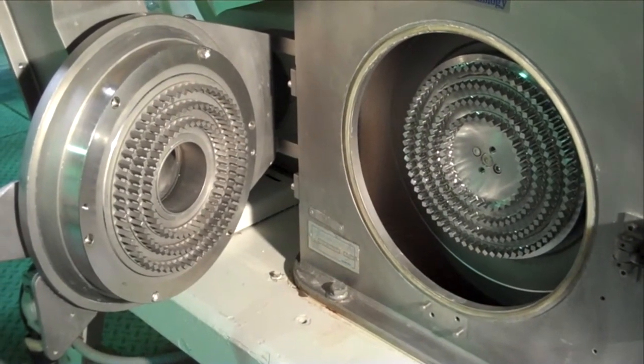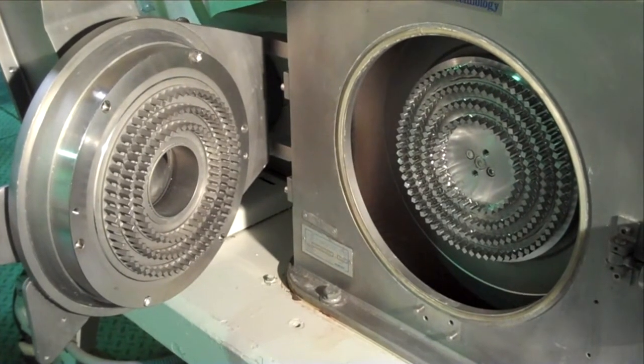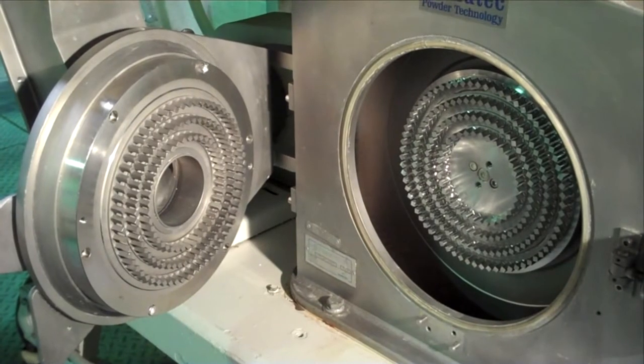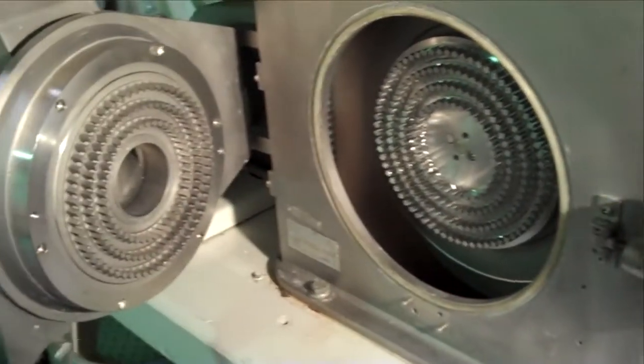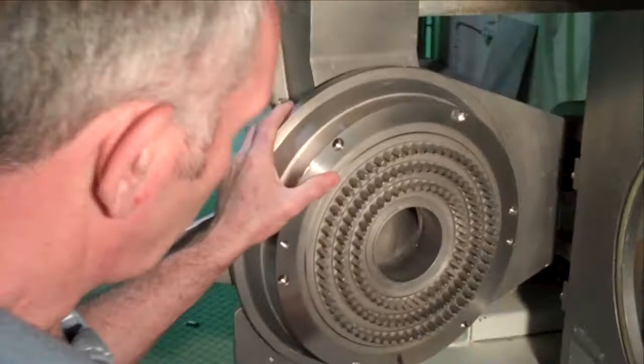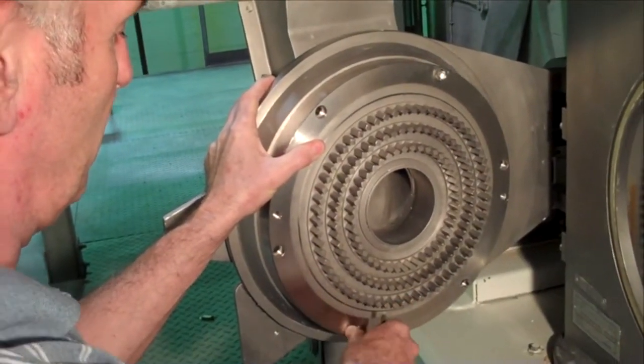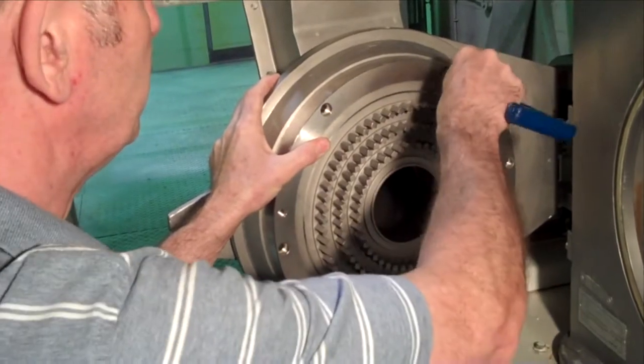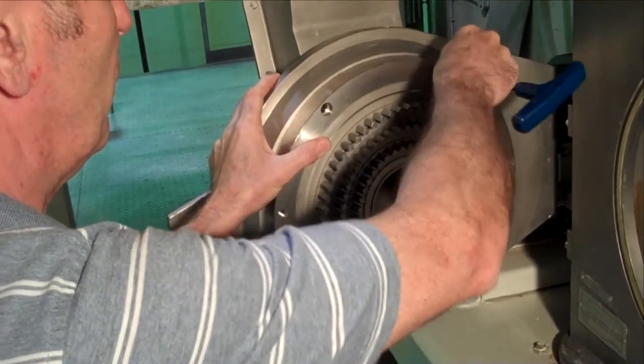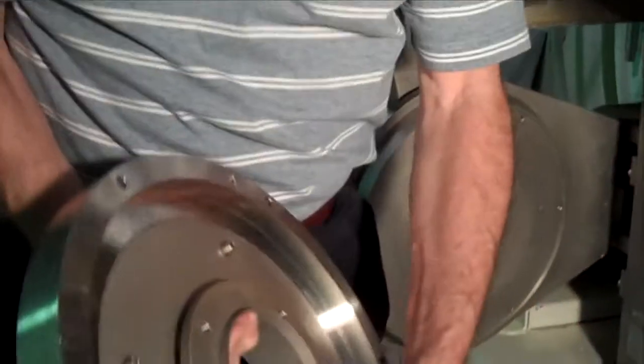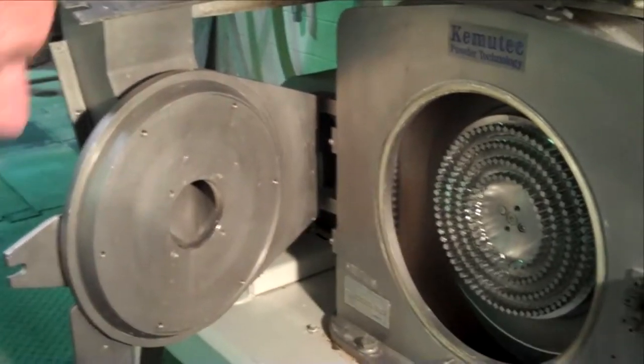Removal of the grinding media to either clean, perform maintenance, or change to an alternative type is simply a case of removing the stator from the door by taking out the screws, pulling that off, and then removing the rotor from the main drive.